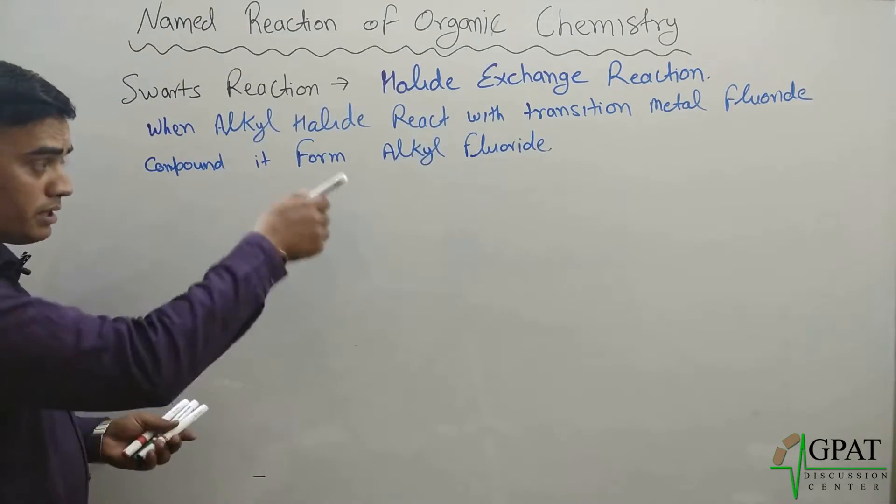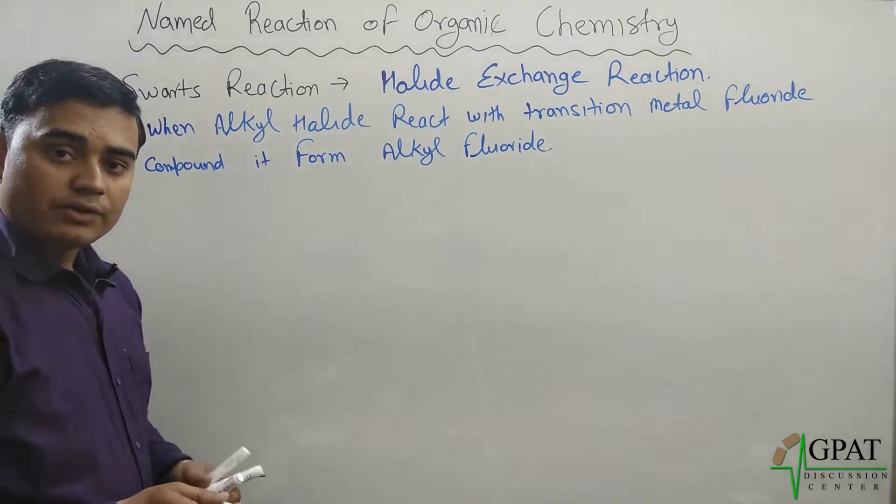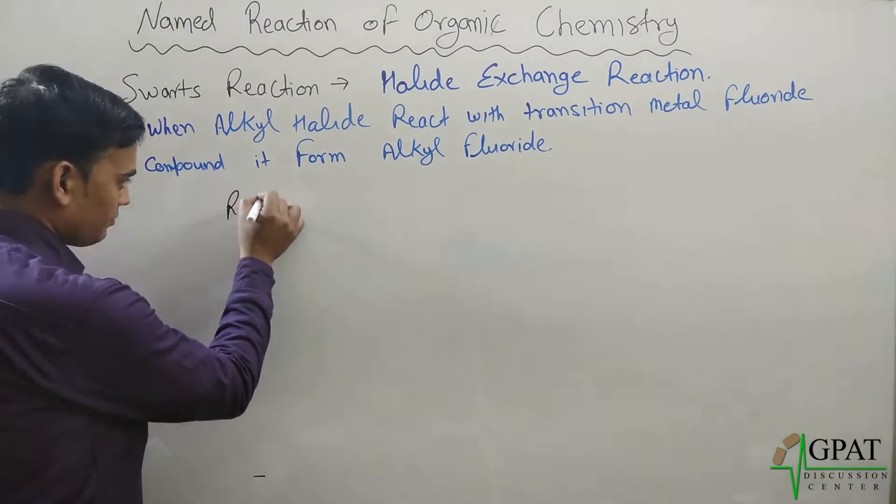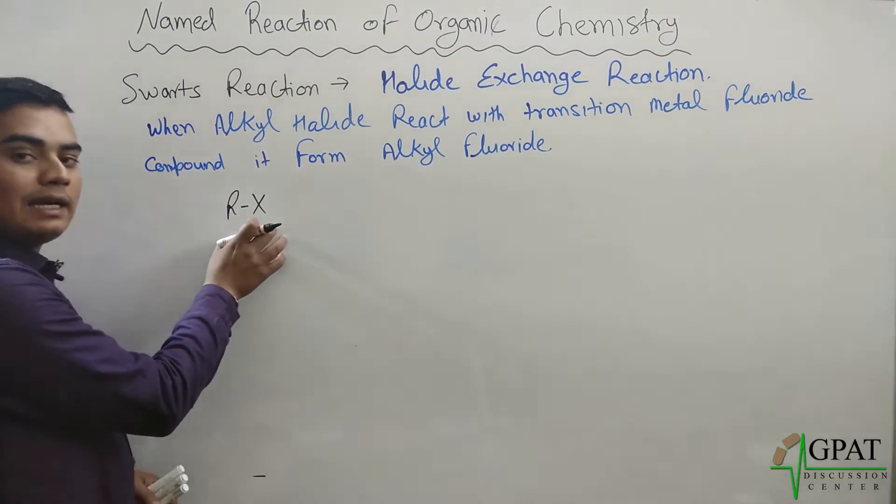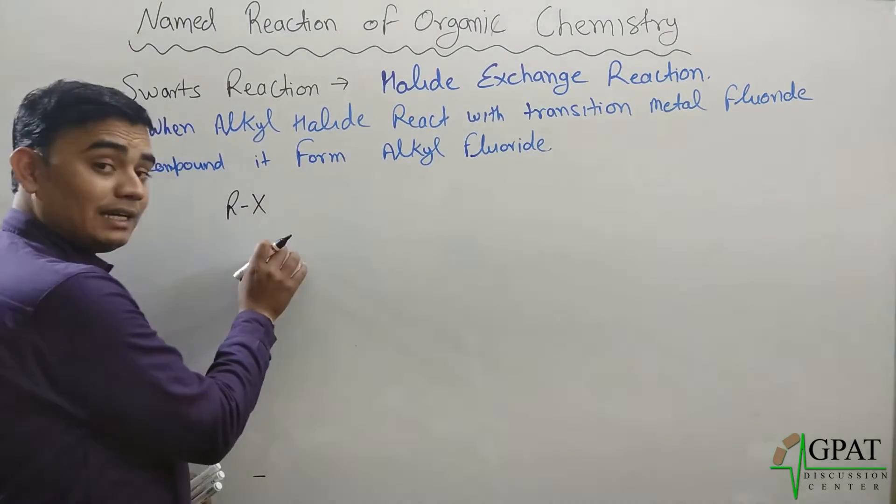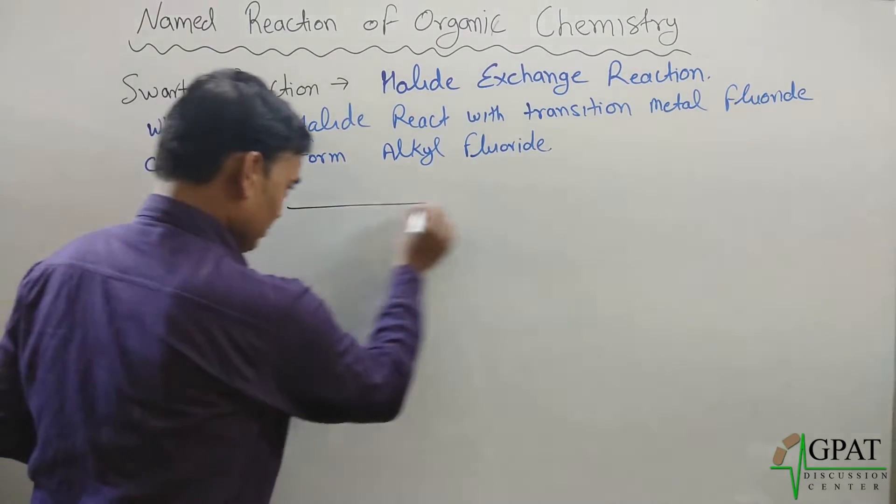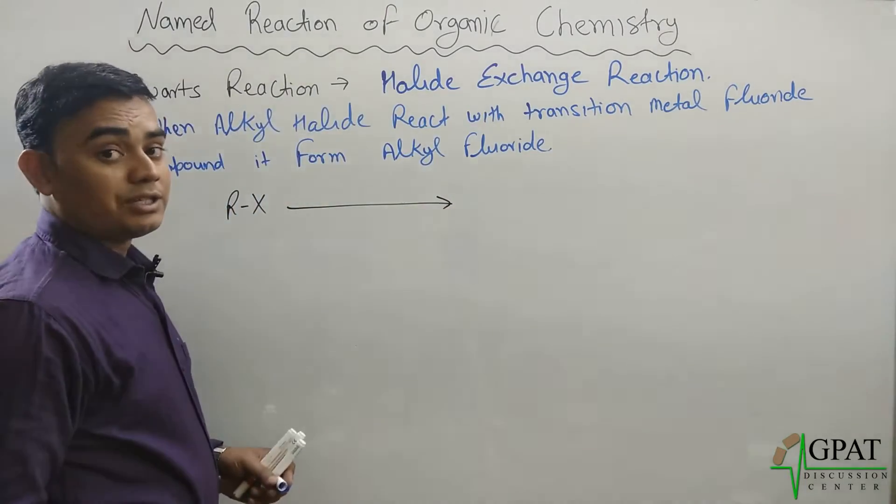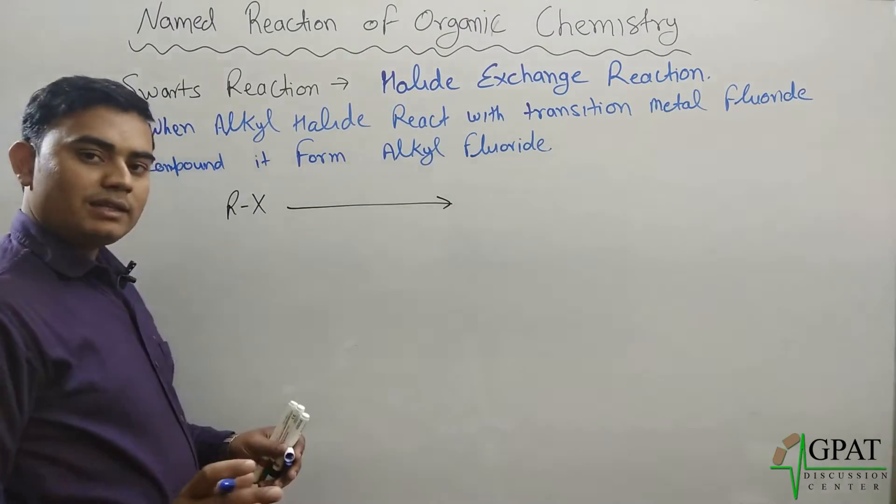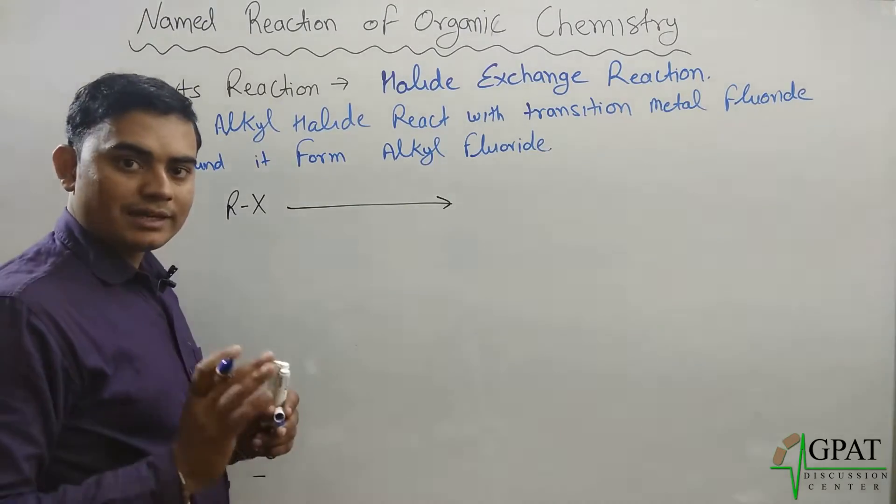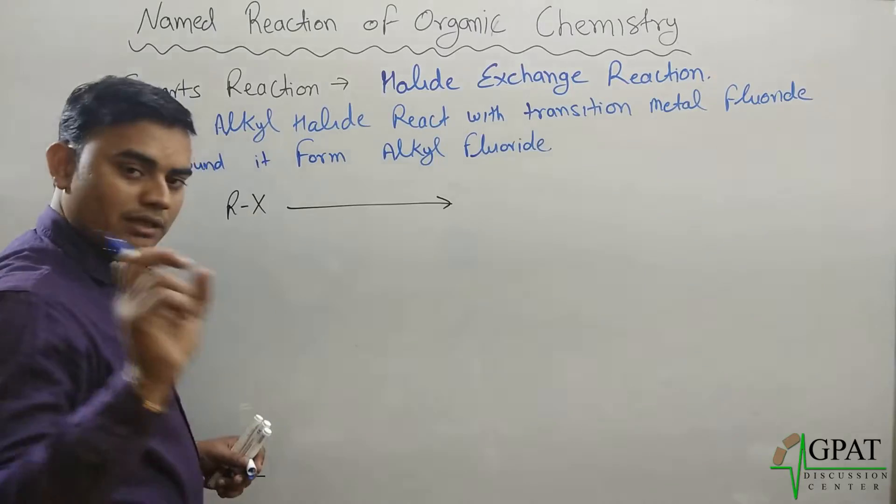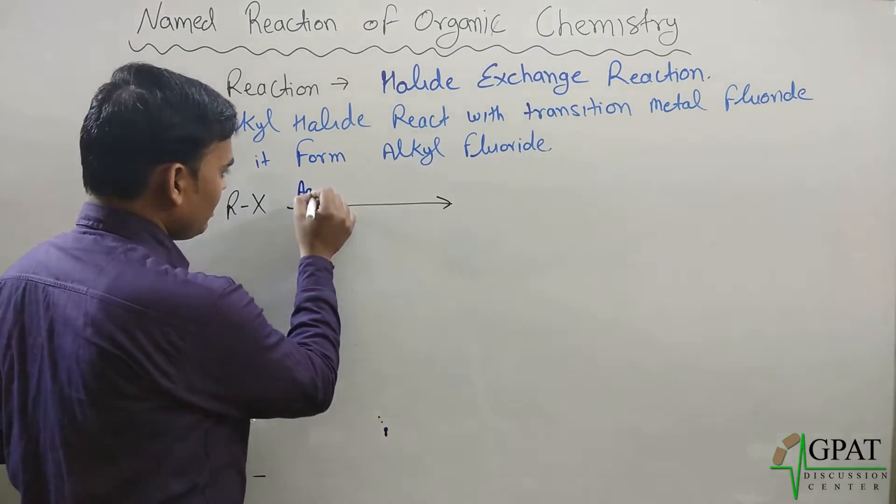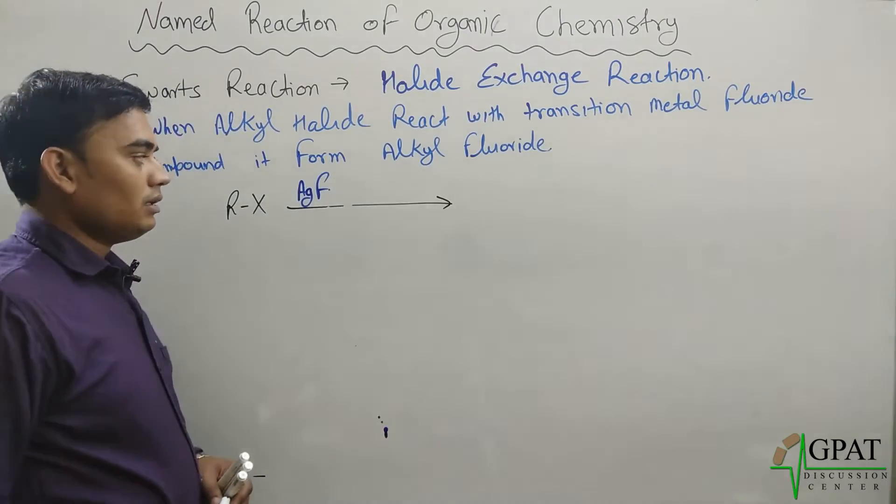What is the meaning of this reaction? To understand this, suppose this is our Alkyl Halide Compound. When this Alkyl Halide Compound react with any transition metal fluoride compound, why the transition metal is necessary? I will take, suppose, AgF silver fluoride,